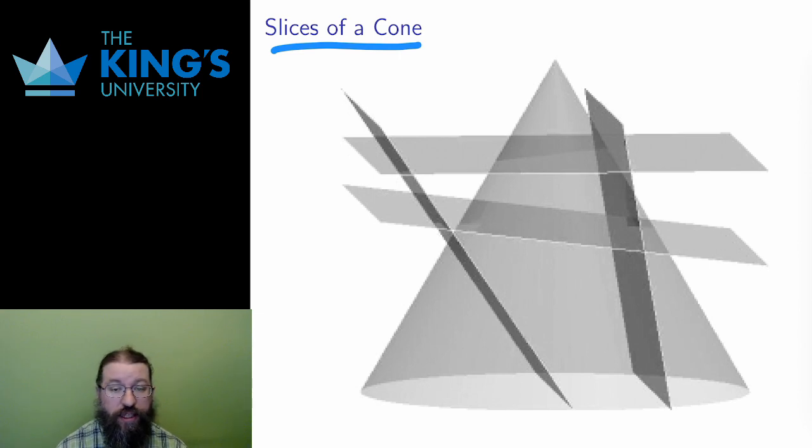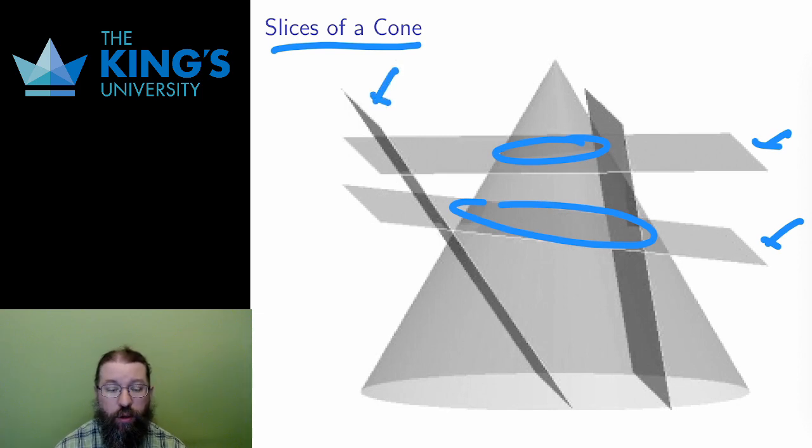A perfectly horizontal slice of a cone will give you a circle. A slightly tilted slice will give you an ellipse. A slice precisely at the same angle of the cone will give you a parabola, and a slice steeper than the angle of the cone will give you a hyperbola.